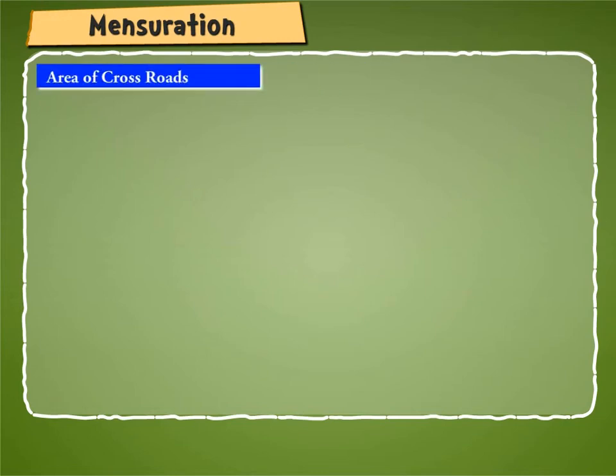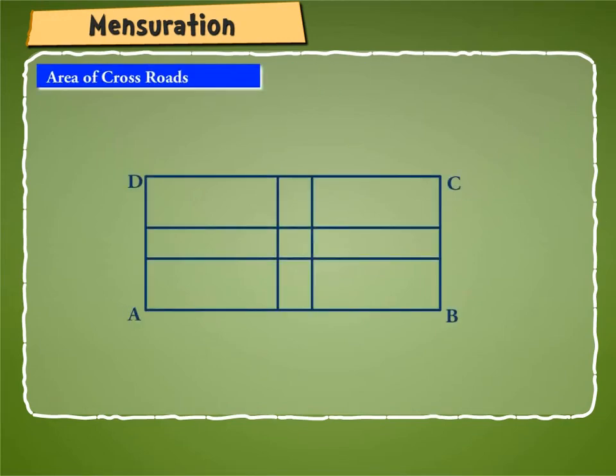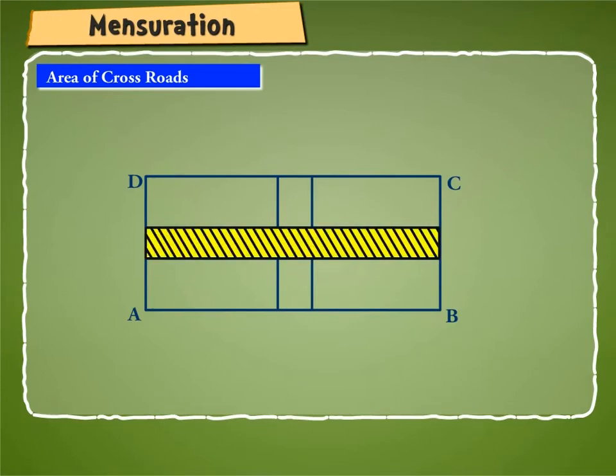Try to find the area of crossroads. In the figure given on screen, ABCD is a rectangular piece of ground. Two roads, one parallel to the length and the other parallel to the breadth together are called crossroads.